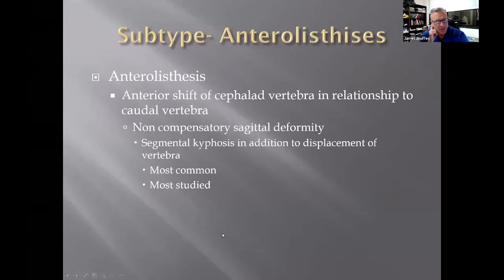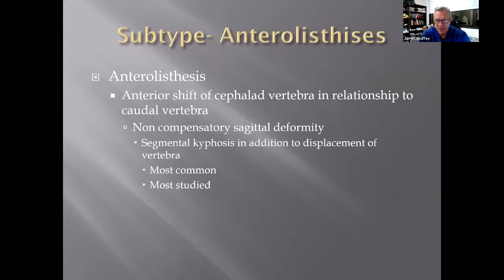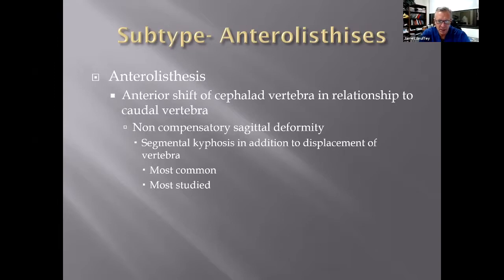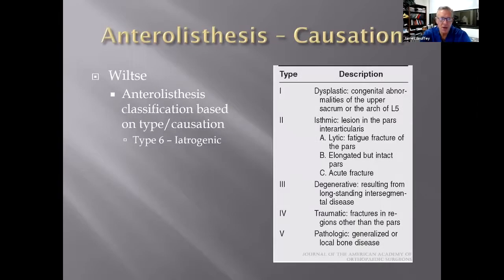Let's start with the subtype of anterolisthesis. It's the anterior shift of the cephalad vertebra relative to the caudal vertebra. I'm calling this a non-compensatory sagittal deformity, as opposed to the compensatory deformities we'll discuss with retrolisthesis and lateralolisthesis. This is essentially a true deformity where vertebrae are shifting due to pathologic processes variable based on causation. It tends to cause segmental kyphosis where it occurs, and it's the most common and most studied form.